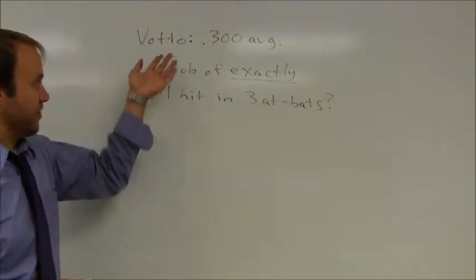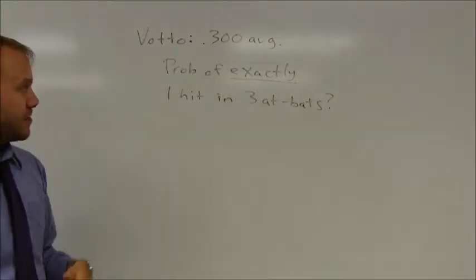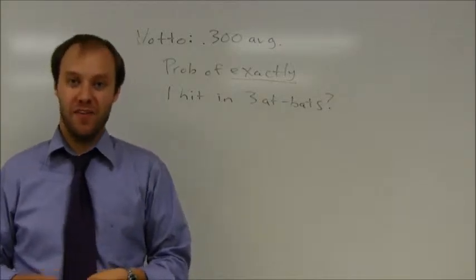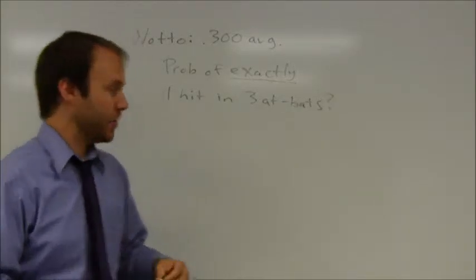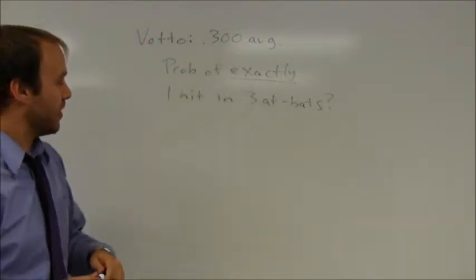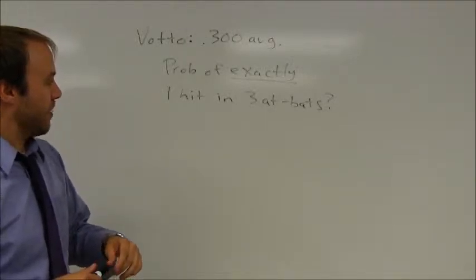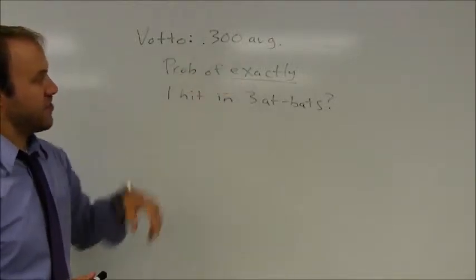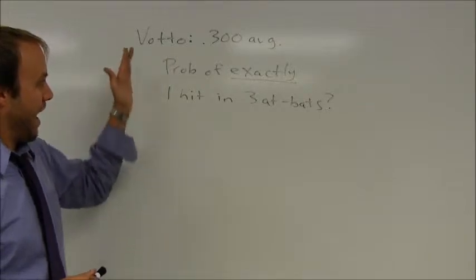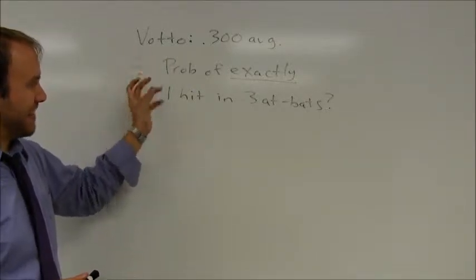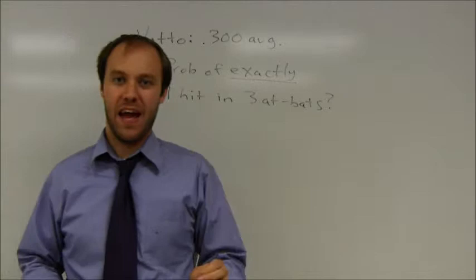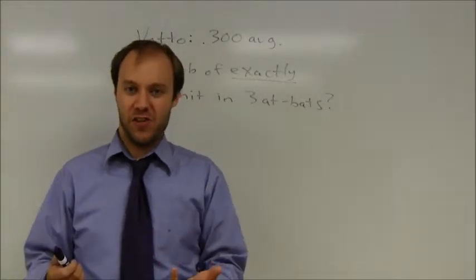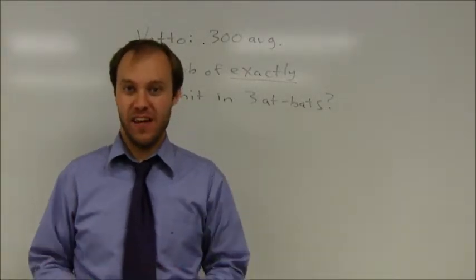So here's my information. In a given baseball season, Joey Votto has a .300 average, which is actually a little lower than he normally hits but works nicely for making the numbers work out in this problem. If he has a .300 average and I want to find the probability that he gets exactly one hit in three at-bats, a .300 average means he gets a hit 30% of the time.